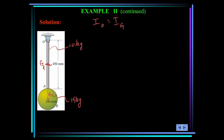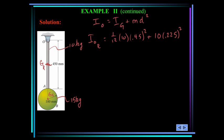The mass moment of inertia about point O equals the moment of inertia about the mass center plus the mass times the distance between the mass center and point O squared. For the rod: I about O equals one-twelfth times mass times length squared, which is one-twelfth times 10 times 0.45 meters squared. Plus, transferring from G sub R to point O, we add the mass times the distance squared: 10 times 0.225 squared. This equals 0.675 kilogram meter squared.